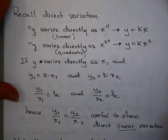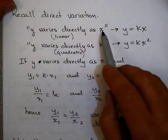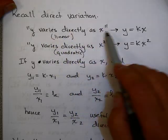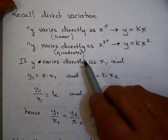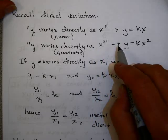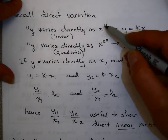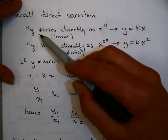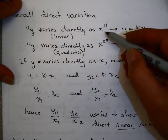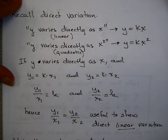You might recall from our last video about direct variation. We used the terms 'y varies directly as x,' sometimes written as 'y varies linearly directly as x,' meaning y equals k times x. And 'y varies quadratically directly as x squared' means y equals k times x squared. In these cases, as one value x went up, the other value went up also, whether in a linear or quadratic fashion.